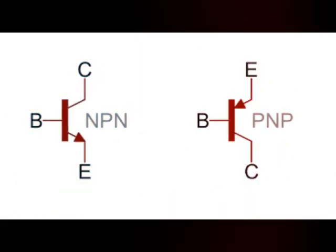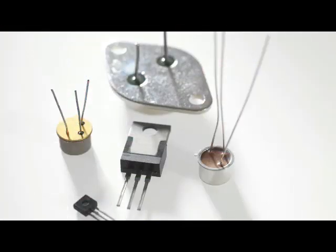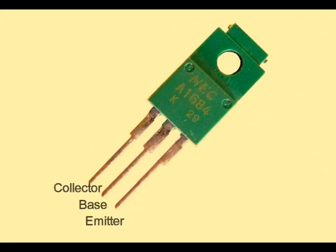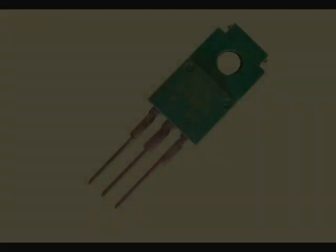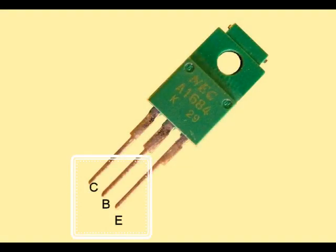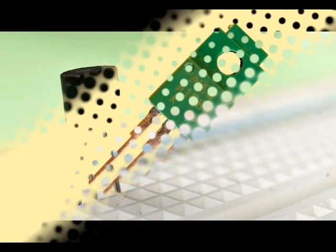NPN and PNP transistor symbols: transistors basically have three terminals. In BJTs, these terminals are called collector, base, and emitter, and we show them with the three letters B, C, and E respectively.